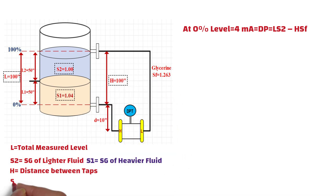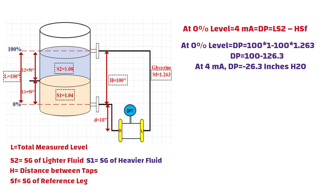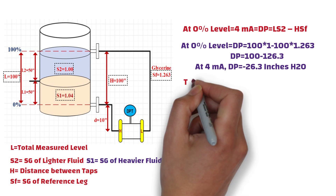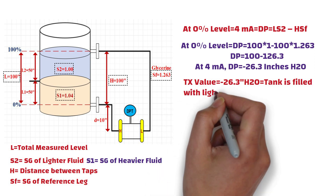Sf is the specific gravity of the reference leg. In this example, the reference leg is filled with glycerin, and its specific gravity is 1.263. Now, putting all these values into the equation and doing the simple math calculation, you will get minus 26.3 inches H2O, which is our lower range value for the DP transmitter. In other words, when the transmitter reads minus 26.3 inches H2O, the tank is filled with lighter fluid.